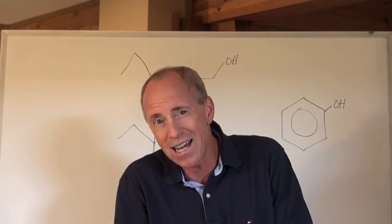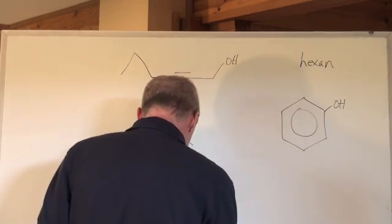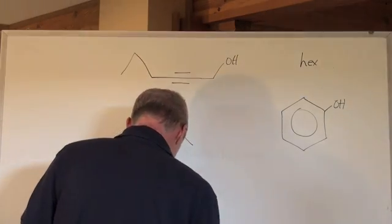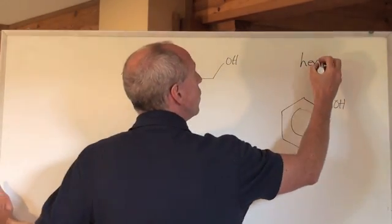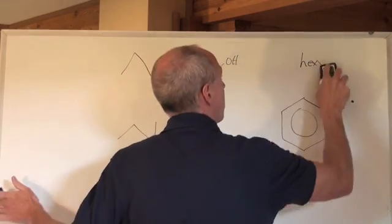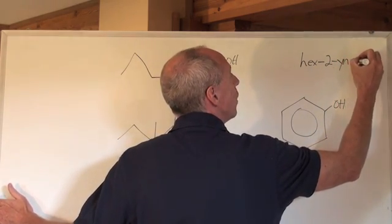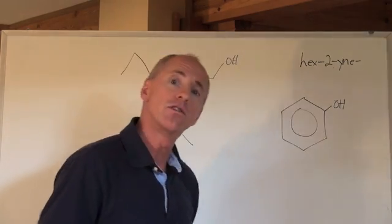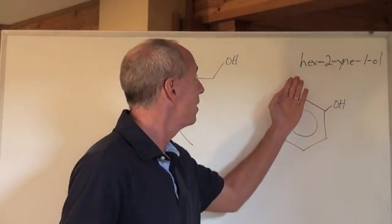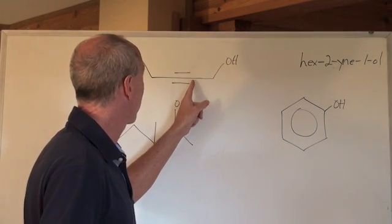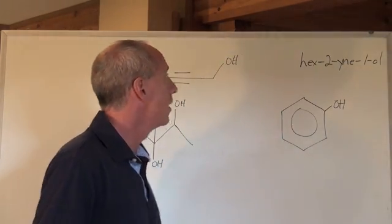So it's a hex and it has a yne in it — hex-yne. Where's the yne? The yne is at the second carbon in, so it's hex-2-yne. And there's an '-ol' at that first carbon, so it's hex-2-yn-1-ol. As strange and weird as that looks, the name is hex-2-yn-1-ol: six carbons total, triple bond at the second carbon, and the alcohol at the first carbon.